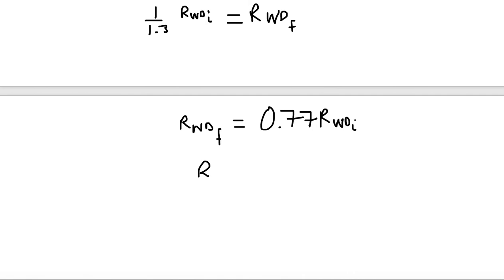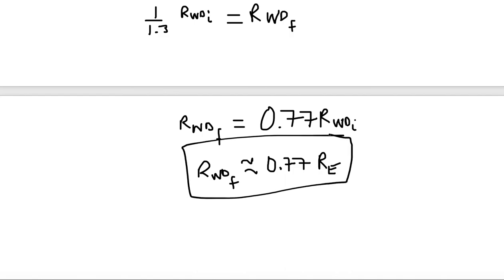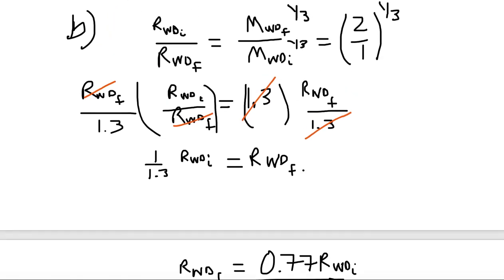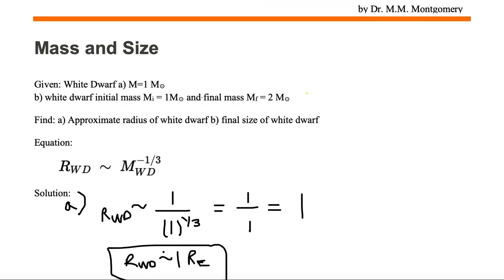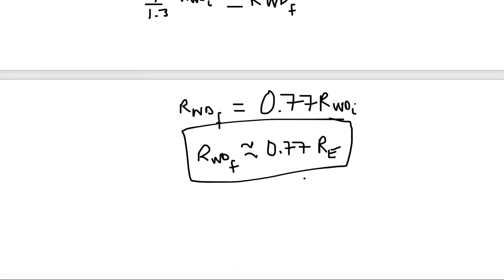So we can find the final radius of the white dwarf. It's approximately 0.77, and the radius we substitute in is the radius of the Earth. This is slightly an overestimate of the size, but you get a general idea that the final radius is going to be smaller than the initial radius. The initial radius was around 1 Earth radius and finally it's 0.77 Earth radii. The more massive the white dwarf, the smaller the white dwarf.